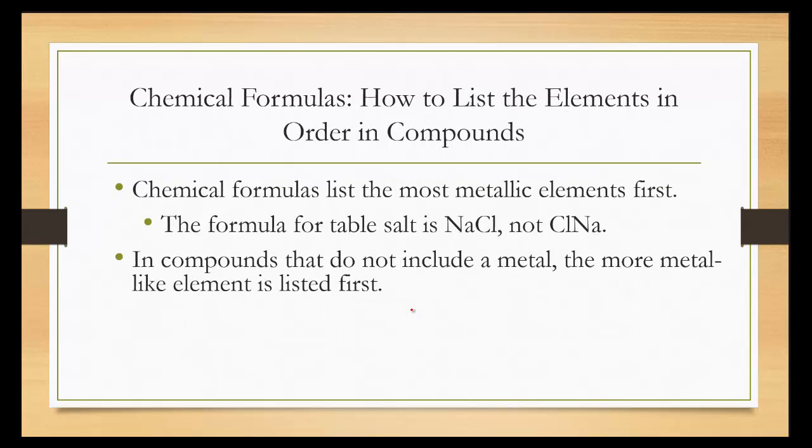Chemical formulas list the most metallic element first. So the formula for table salt is NaCl, not ClNa. In compounds that do not contain a metal, the more metallic-like element is listed first.